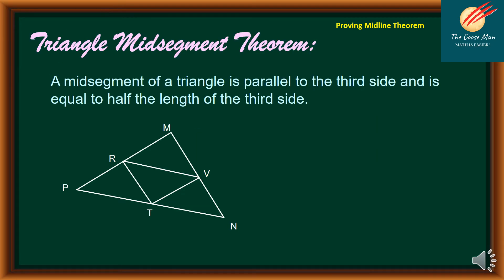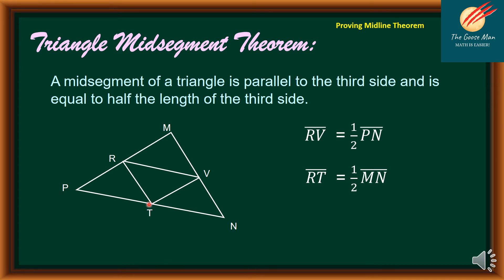The triangle midsegment theorem states that a midsegment of a triangle is parallel to the third side and is equal to half the length of the third side. From the figure with triangle PMN, we can say that RB is equal to one-half PN, RP is equal to one-half MN, and BP is equal to one-half MN.